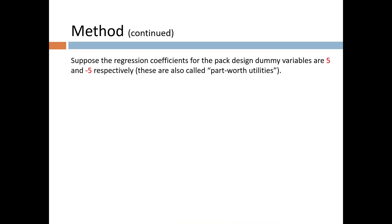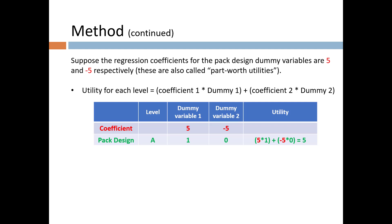Let's take a hypothetical example. Suppose the regression coefficients for the pack design dummy variables have the values 5 and -5 respectively. Regression coefficients in conjoint analysis are also called part-worth utilities. We calculate the utility for each level by multiplying the coefficient for each dummy with the value of the dummy variable and adding it up across all the dummy variables. In this example, level A has values of 1 and 0 for the two dummy variables. Multiplying them with the coefficients 5 and -5 gives you a utility of 5.